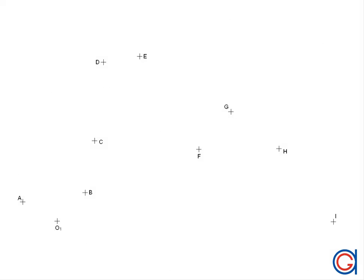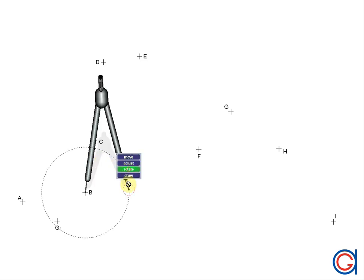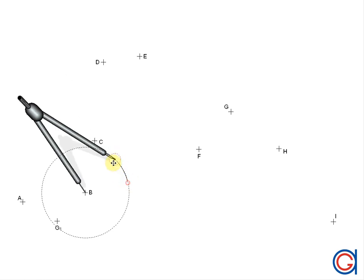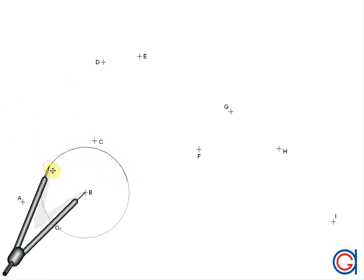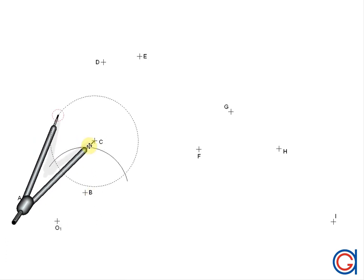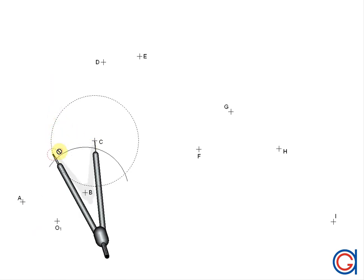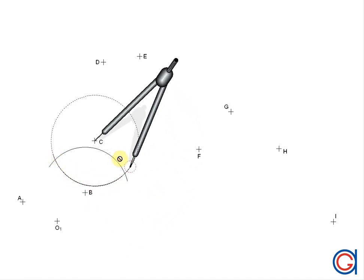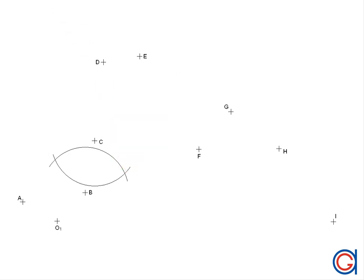The first step is to work out the perpendicular bisector of the given points B and C. Setting the compass on any radius more than half of BC and centered on B, we scribe an arc to the left. Then with the same radius centered on point C, we scribe another arc intersecting the previous arc at two points. Joining these two points gives us the perpendicular bisector.